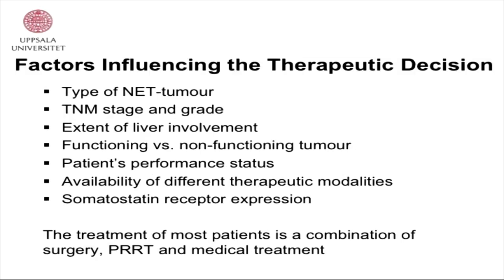Factors influencing the therapeutic decision include: type of NET tumor, the TNM stage, and the grade of the tumor. Stage means how spread is the tumor; grade means how aggressive it is. The extent of liver involvement, functioning versus non-functioning tumor, tumors producing hormones causing endocrine symptoms — these need additional treatment. Patient performance status, availability of different therapeutic modalities, and somatostatin receptor expression.